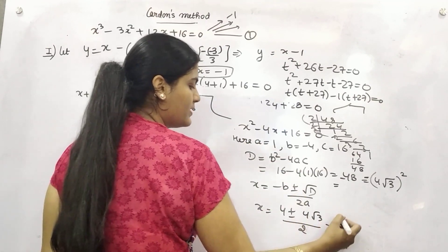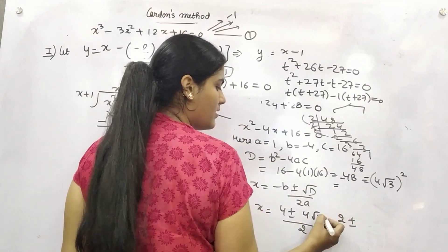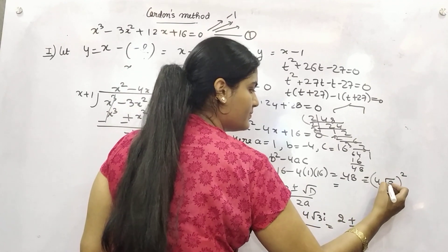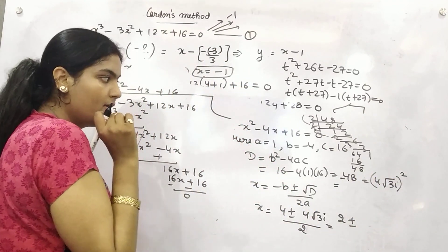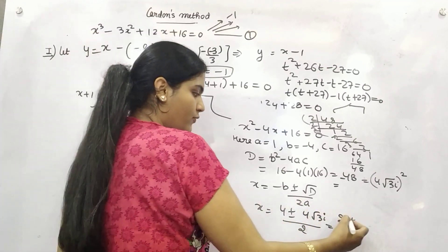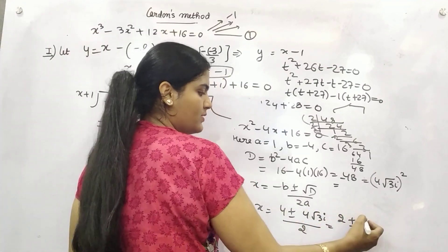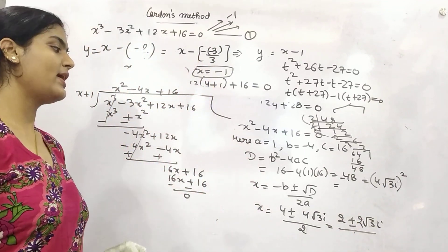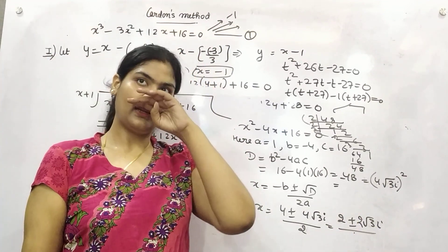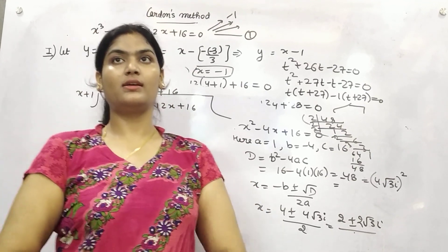So you can take it out 4 root 3 by 2a. 2a means 2 times 1. So it is 2 plus minus. This is iota. So if you cancel 2, this is. So these are your 2 roots. 2 plus 2 root 3 iota and 2 minus 2 root 3 iota. I hope you get this solution.